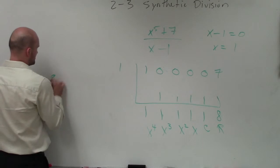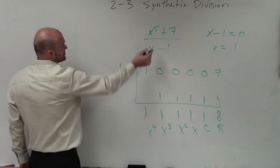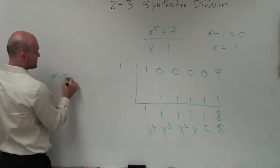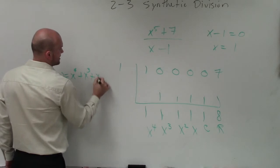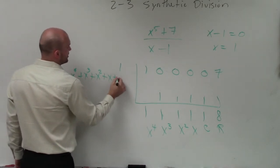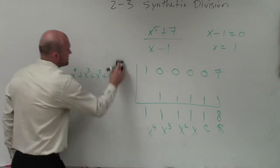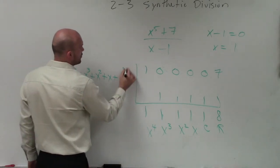Therefore, our quotient polynomial that divides x minus one into x to the fifth plus seven is going to equal x to the fourth plus x cubed plus x squared plus x plus one. And then we make sure we take our remainder and we put it over our divisor.